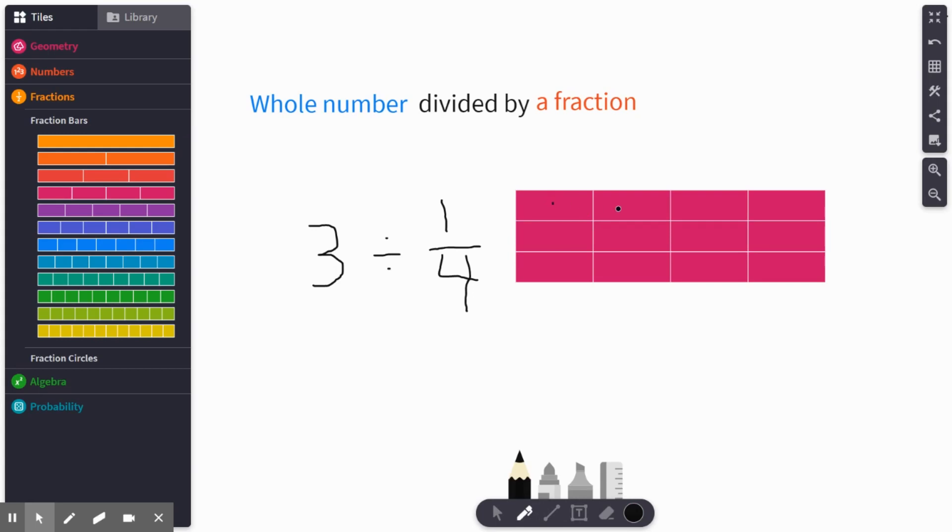And if you just count them up, you can just count 1, 2, 3, 4, 5, 6, 7, 8, 9, 10, 11, 12.